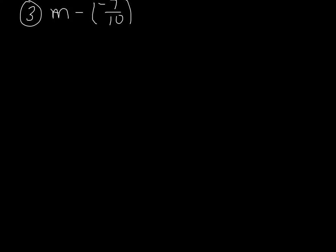Number 3. M minus a negative 7 tenths equals negative 1 and 1 fifth. Remember way back when I said we are subtracting a negative number — they both become positives, which is really the same as adding. Because I'm subtracting the opposite, that would be the same as adding. So I'm not subtracting a negative; I'm adding a positive number when I have two negatives in a row. So really I can erase these two and say I'm adding 7 tenths. That's what that means right there.